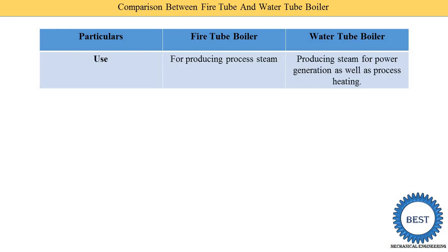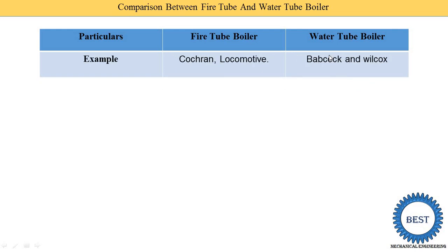Next point is the use of the boiler. Fire tube boiler is used for producing process steam — meaning steam produced by the fire tube boiler is used in different textile processing or different industries — it is not used for power generation. In a water tube boiler, steam is produced for power generation as well as for processing. Meaning water tube boiler is used in power plants as well as for processing. The last point is examples: fire tube boiler examples are the Cochran boiler and locomotive types. Water tube boiler example is the Babcock and Wilcox boiler.